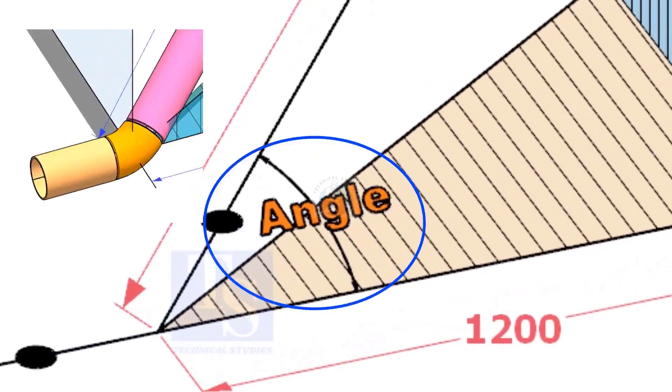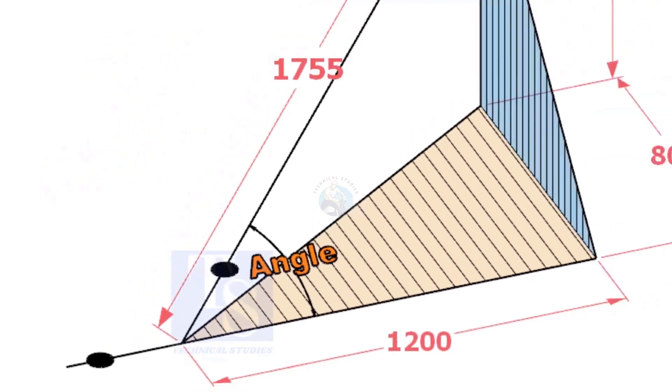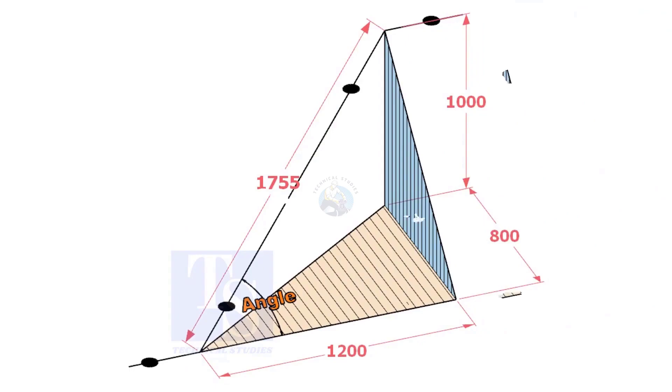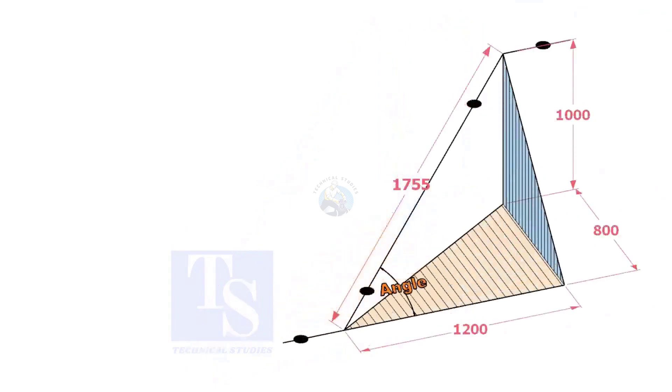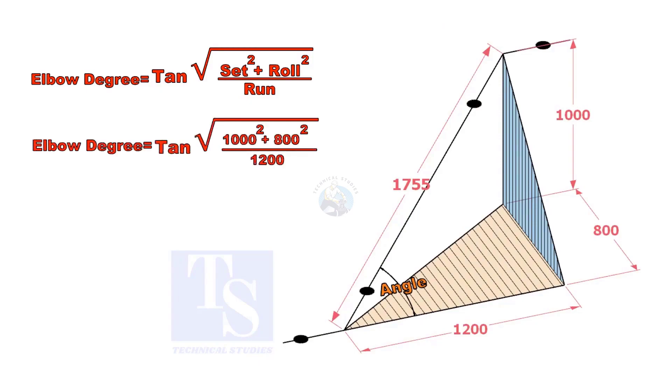Let us calculate the degree of the elbow or the included angle. The formula is tangent inverse of the square root of set squared plus roll squared divided by run.